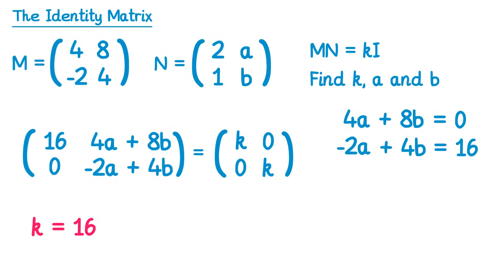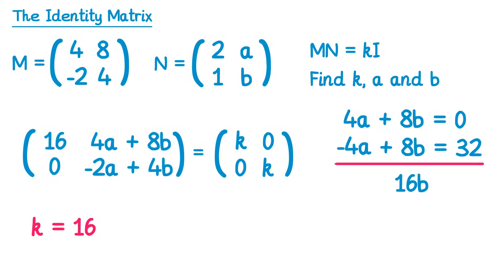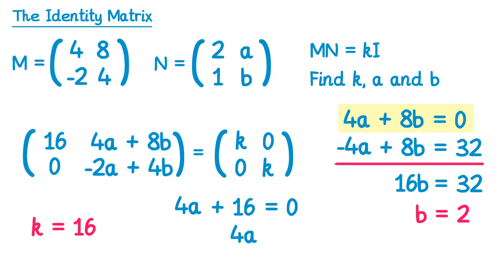We found k, so we just need to find a and b using our simultaneous equations. If we take the second equation and double it: negative two a becomes negative four a, four b becomes eight b, and sixteen becomes thirty-two. Adding the equations: four a plus negative four a is zero, eight b plus eight b is sixteen b, and zero plus thirty-two is thirty-two. So sixteen b equals thirty-two, giving b equals two. Substituting back into the first equation: four a plus eight times two, which is sixteen, equals zero. So four a equals negative sixteen, and a equals negative four.